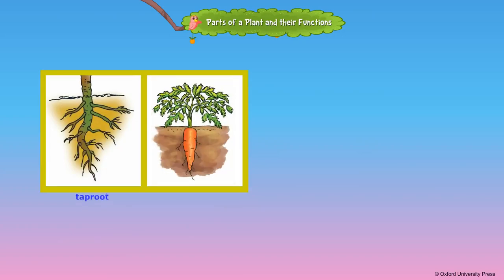A long main root grows at the end of the stem, which is known as taproot. A taproot has many sub-roots which grow from its sides. Carrot is a modified form of a taproot, which is edible.